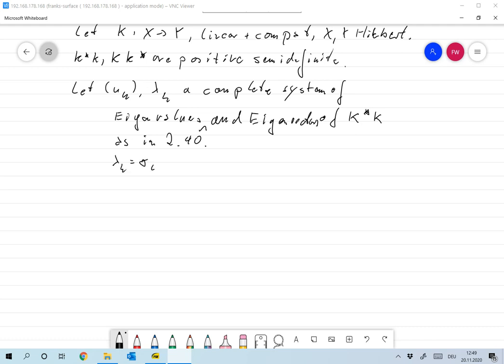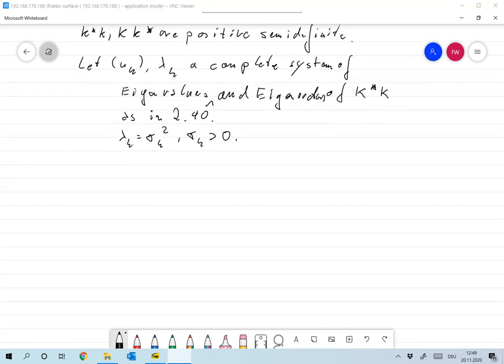...we can set lambda_k equal to sigma_k squared, where we take the sigma_k with a positive sign, and it's actually positive because the lambda_k are non-zero.